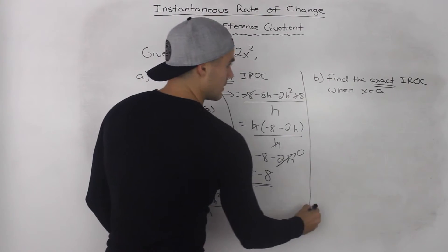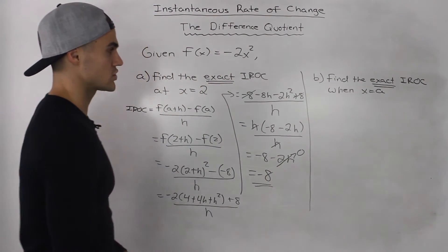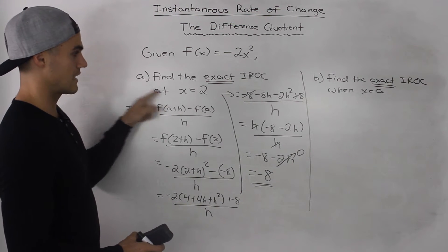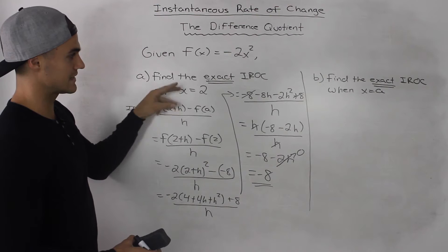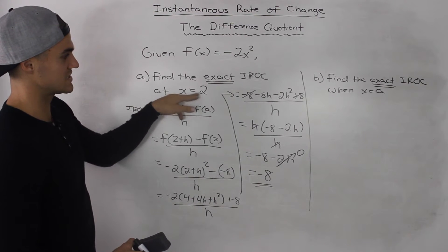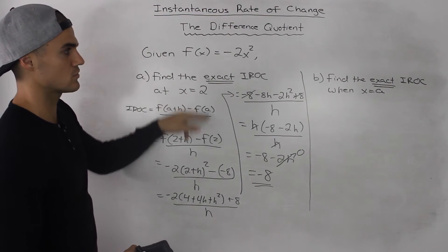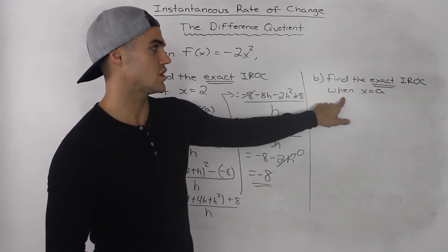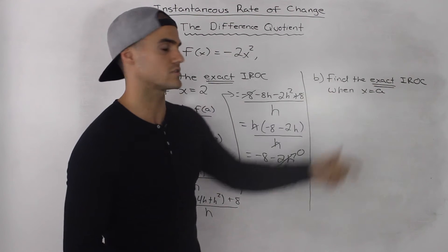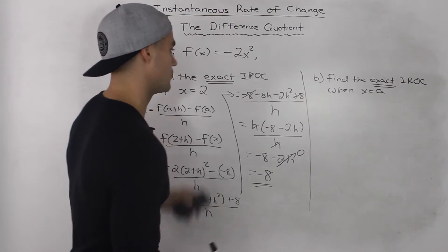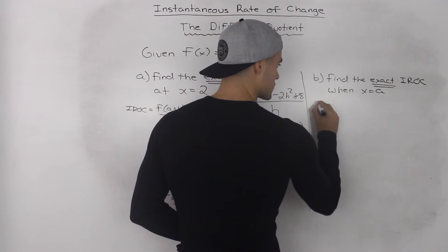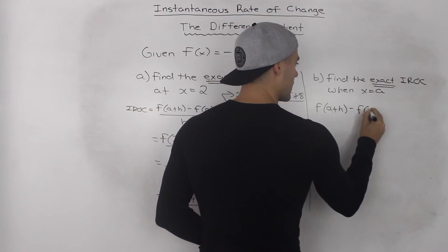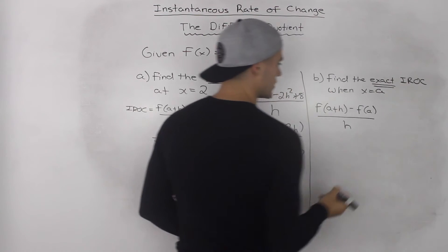Now in part b, this is a unique question we haven't done yet. In the previous example and in part a, they asked for the exact instantaneous rate of change at a specific point, x = 2. Now they want a general expression for the instantaneous rate of change at a general point, x = a. We do the same thing — rewrite the difference quotient as f(a+h) minus f(a), all over h.